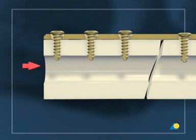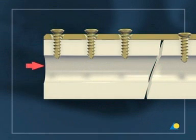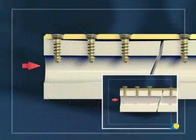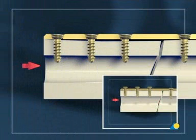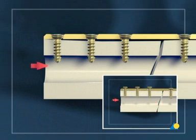In conventional plating systems, screw loosening may lead to loss of reduction. In a locking system, screw loosening rarely occurs because the screw head is locked to the plate.